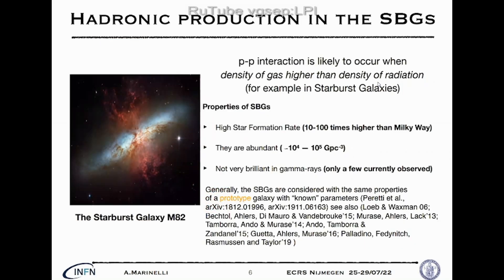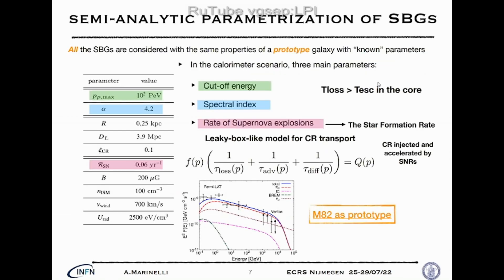It is important to look at starburst galaxies because they have a very high star formation rate in the central few hundred parsecs. They also contain cosmic rays in this region, providing a nice environment for proton-proton interactions — therefore we can expect enhanced hadronic production. They are very abundant but not so luminous in gamma rays, with star formation rates 10 to 100 times that of the Milky Way.